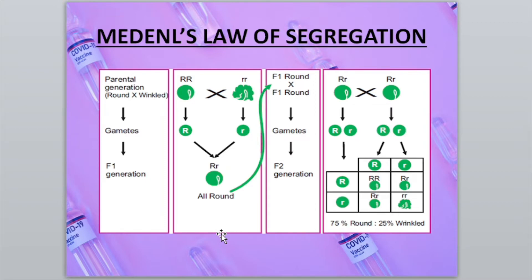The organism should be capable of self-fertilization and cross-fertilization. Moreover, the organism should have a short and fast life cycle. Mendel selected the pea plant because it had seven different contrasting traits: seed shape, seed color, flower color, pod color, pod shape, flower positioning, and stem length.